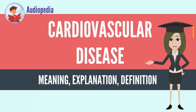Rates have declined in most of the developed world since the 1970s. Coronary artery disease and stroke account for 80% of CVD deaths in males and 75% of CVD deaths in females. Most cardiovascular disease affects older adults. In the United States, 11% of people between 20 and 40 have CVD, while 37% between 40 and 60, and 71% of people between 60 and 80.